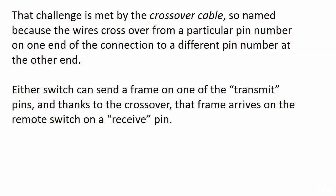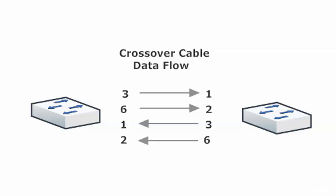So what we need here is a crossover cable. And where we get that name is that the wires cross over from a particular pin number on one end of the connection to a different pin number at the other end. What this allows is that either switch can send a frame on one of its transmit pins, and thanks to the crossover, it arrives on the remote switch on a receive pin. So that's exactly what we want. With the crossover cable, 3 goes to 1 and 6 goes to 2. So when the switch is talking on pins 3 and 6, the other one is listening on 1 and 2, and we're all set. But 3 to 1, 6 to 2, and then 1 to 3 and 2 to 6. That's the crossover cable.